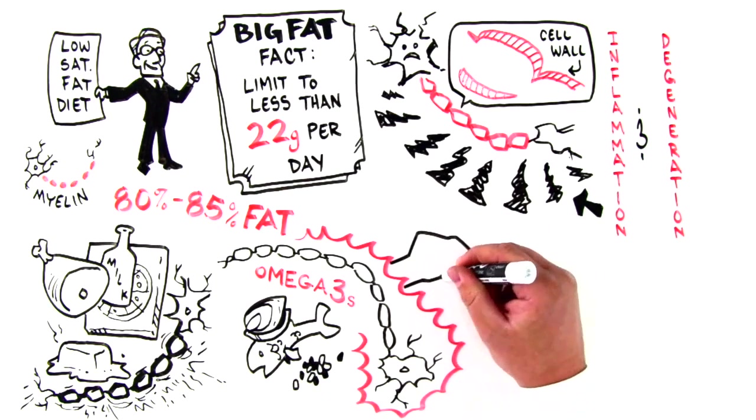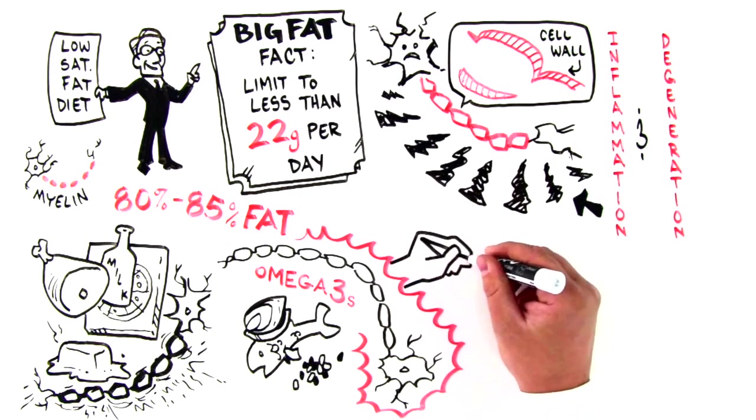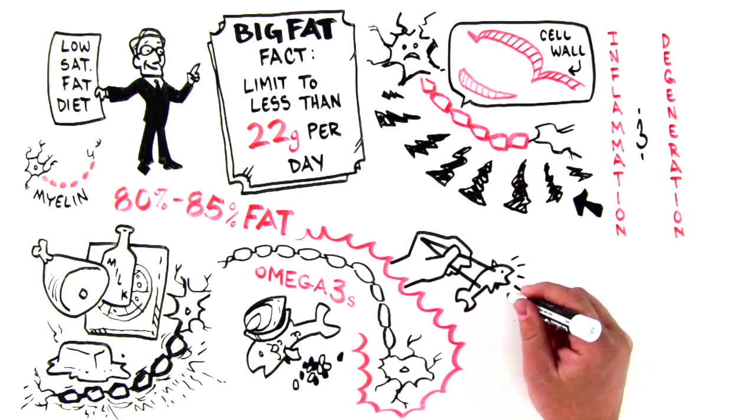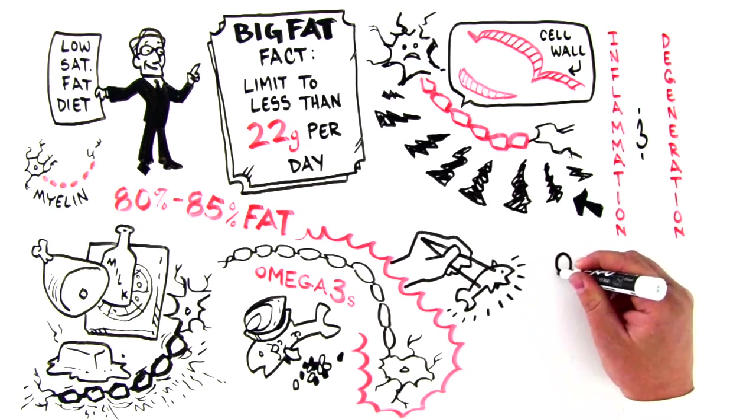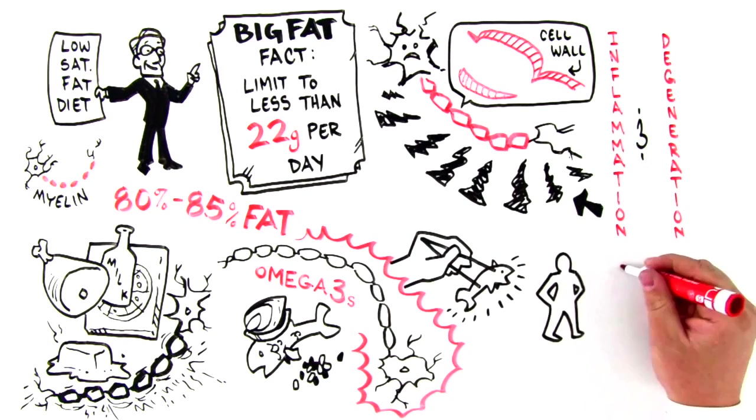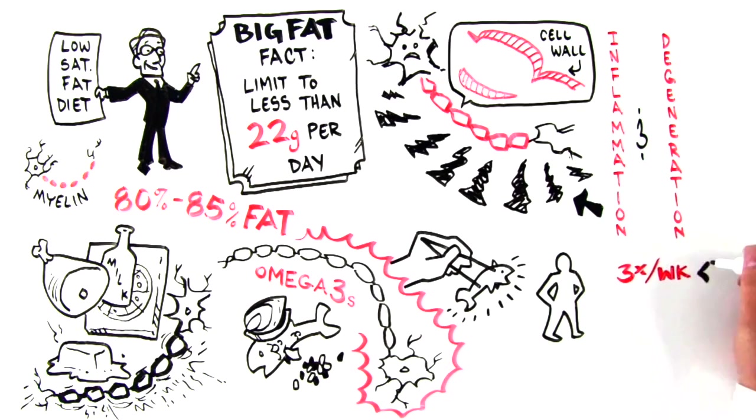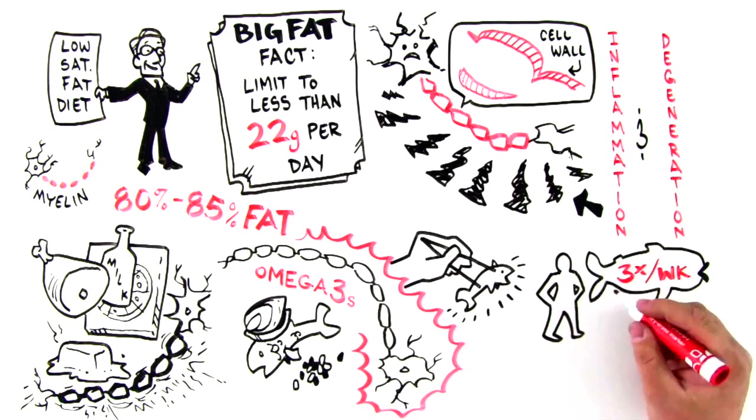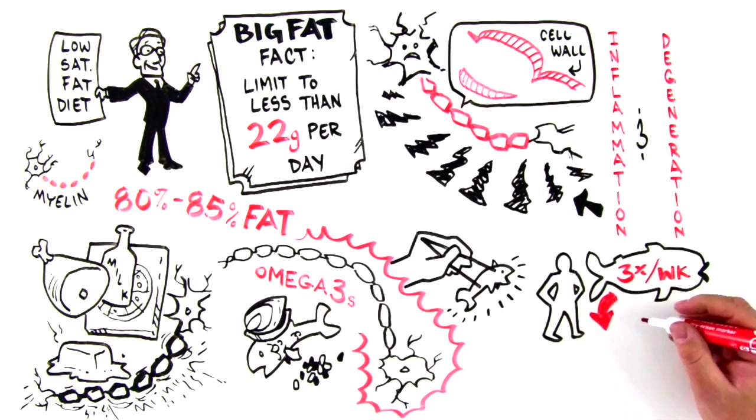We have good evidence that MS is infrequent in places like Japan, where fish, which is high in omega-3, is eaten regularly. More recently, the Holism study results show that people with MS who consumed fish three or more times per week had better physical and mental health outcomes and a 50% reduction in relapse rates.